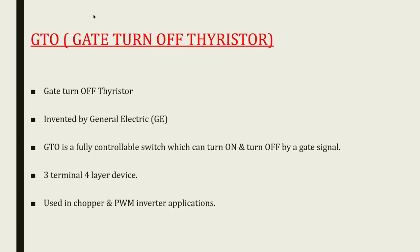We are going to see about GTO — Gate Turn-Off Thyristor. GTO is a special kind of thyristor invented by the General Electric company. Apart from normal thyristors, GTO is different in that it is a fully controllable switch in which turn-off and turn-on can be controlled by using a gate signal.